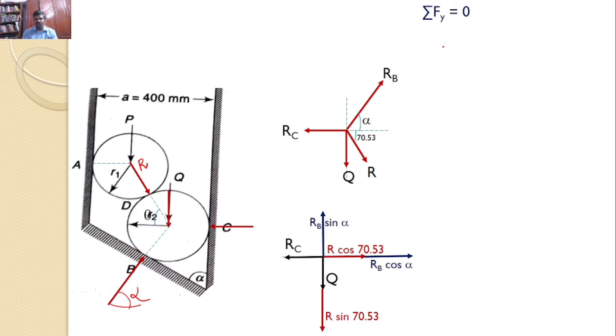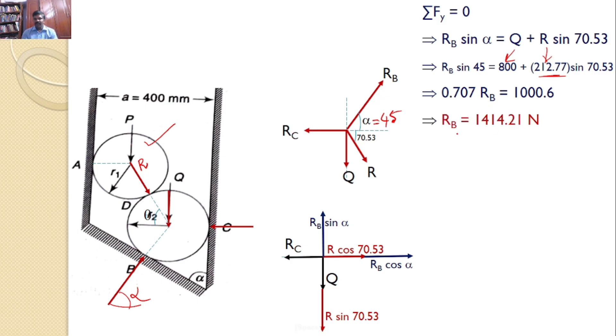Let us use sigma Fy is equal to 0. That means, RB sin alpha is equal to Q plus R sin 70.53. And you can substitute. Alpha value is given as 45 degrees in the problem itself. So, RB sin 45 is equal to Q value is given as 800. R value is 212.77. We calculated by considering the free-body diagram of the roller P. And upon substituting the values and after solving, you can find RB, 1414.21 newtons. This is one of the answers.